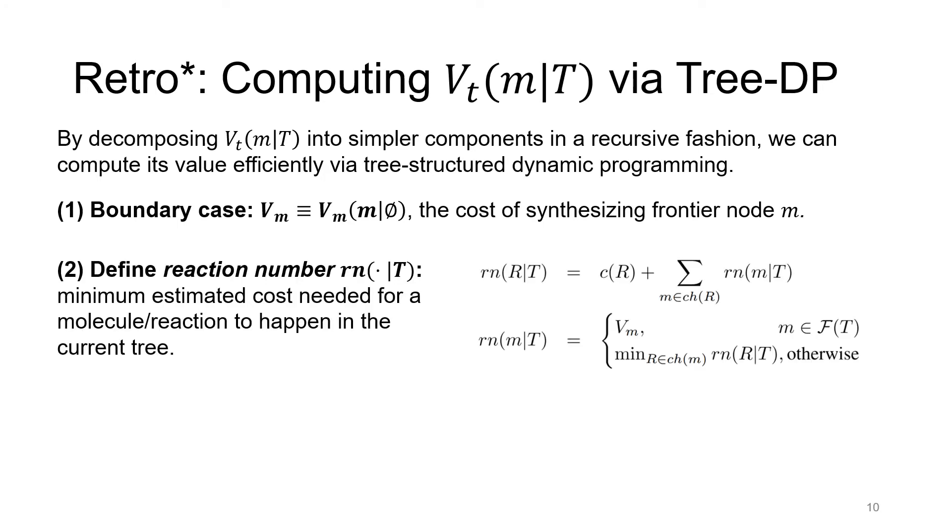Next, we define a reaction number to be the minimum estimated cost needed for a molecule or a reaction to happen in the current tree. This reaction number will serve as an intermediate value for computing Vt(m|T). With the definition, we can come up with two recursive formulas for computing the reaction numbers using dynamic programming. For each reaction, the reaction number will be the sum of its value and the reaction number of all the reactants. And then for each molecule, the reaction number will be Vm if m belongs to the frontier node set, or the minimum reaction number of all its children's reactions.